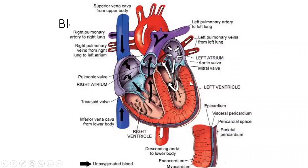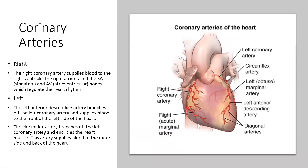You'll notice that the left ventricle is a little bit thicker than the right ventricle. The reason is that the left ventricle is responsible for pushing the blood all the way out to the head, neck, and the rest of the body, requiring a much greater contraction force. The area between the ventricles is called the septum, which separates the left ventricle from the right ventricle.